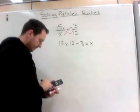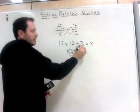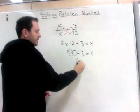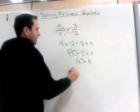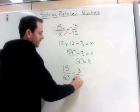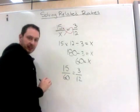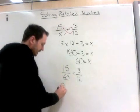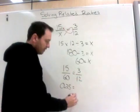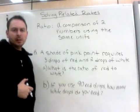And 15 times 12 equals 180, divide by 3. And this is 60 equals x. So 15 divided by 60 is 3 over 12. And you can check these by trying them in your calculator. 15 divided by 60 is 0.25, 3 divided by 12 is 0.25.